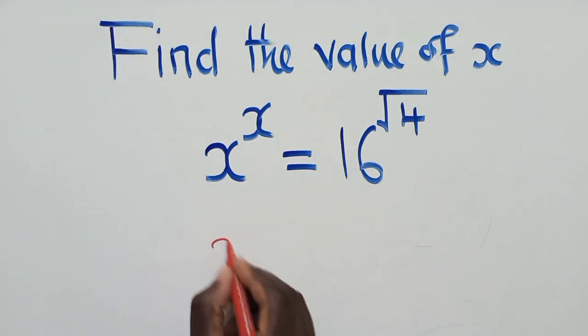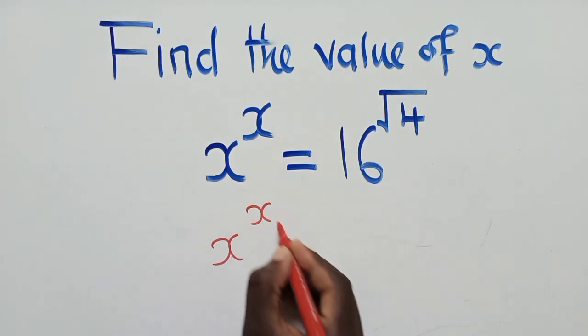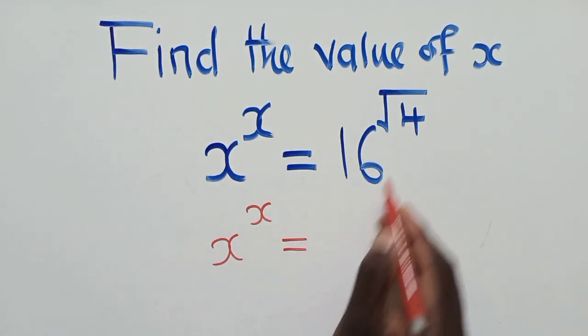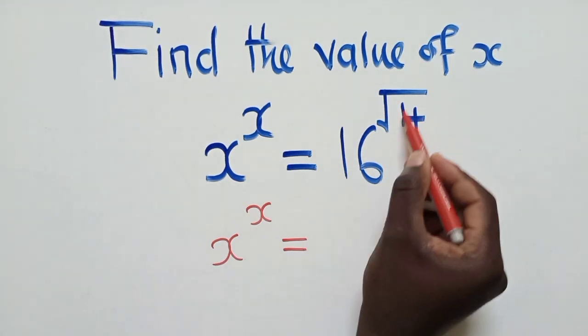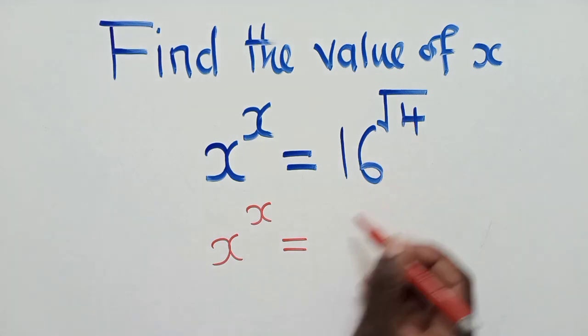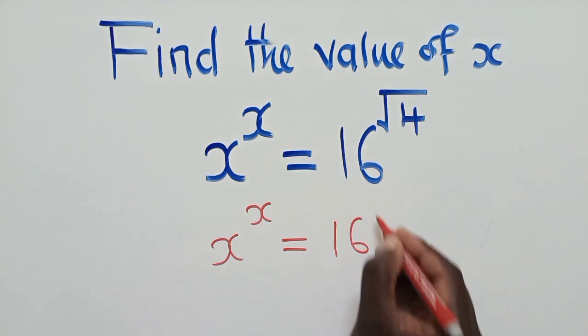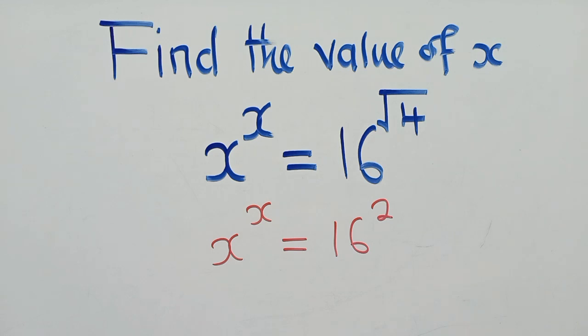Here we maintain the x and the power x equal to—if you can see here, square root over 4 is 2—so it would be 16 power 2.